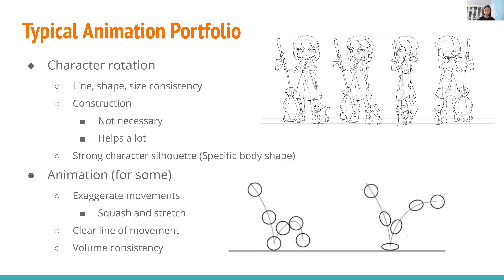Character rotation isn't present in every animation portfolio requirement, but for some it is. What they're looking for most is consistency between the line thickness, shape, and size for your character. Construction isn't necessary, but I think it's better to show a bit — it helps yourself a lot as well. You should have a character with a strong silhouette, like a specific body shape.